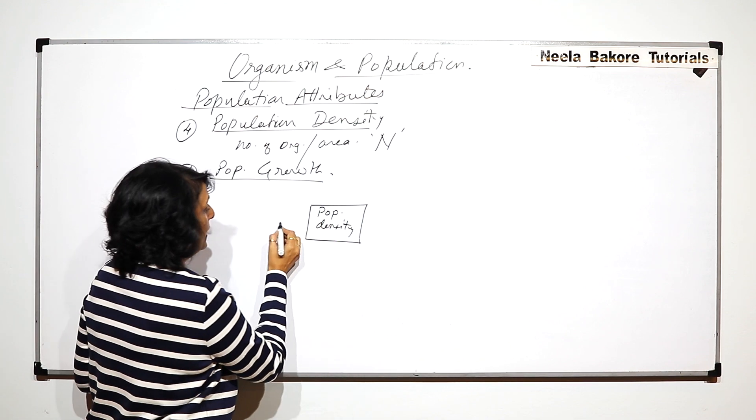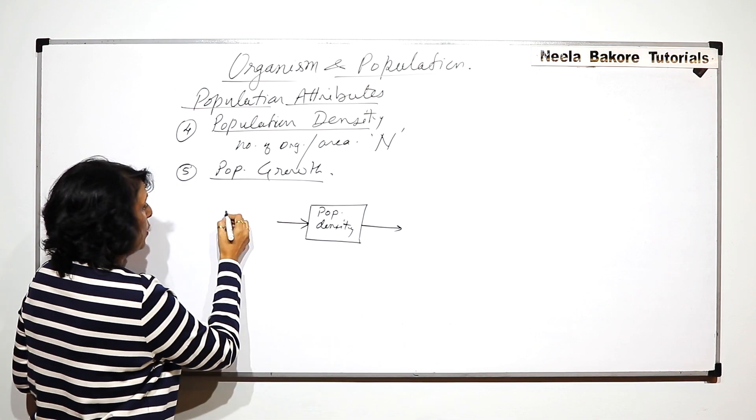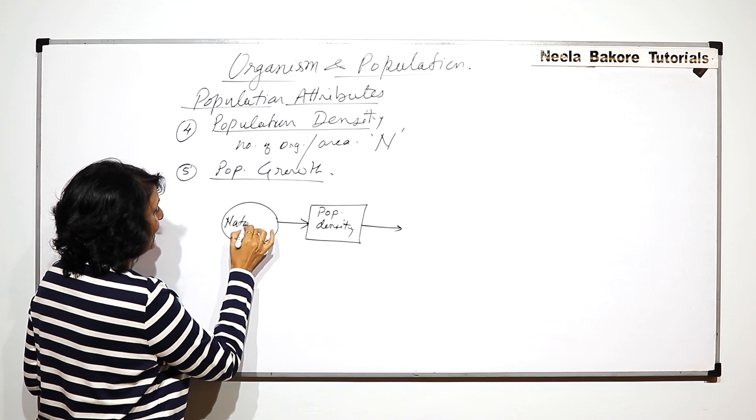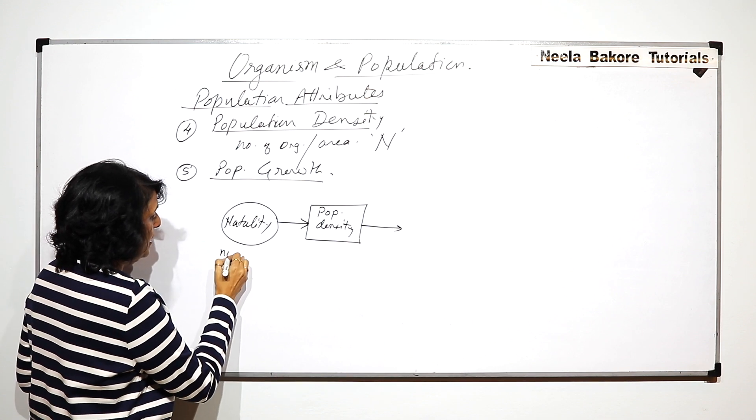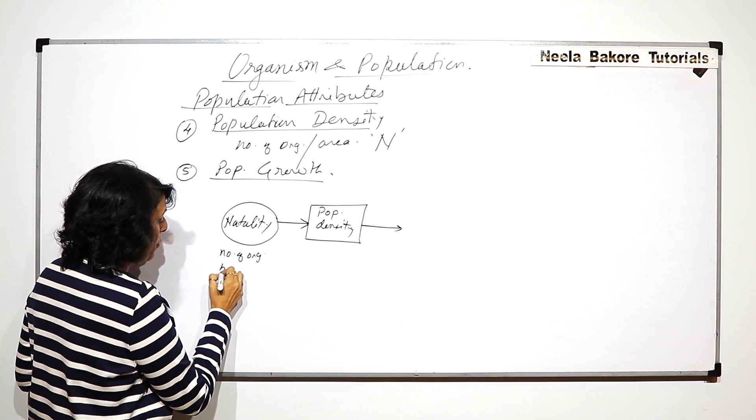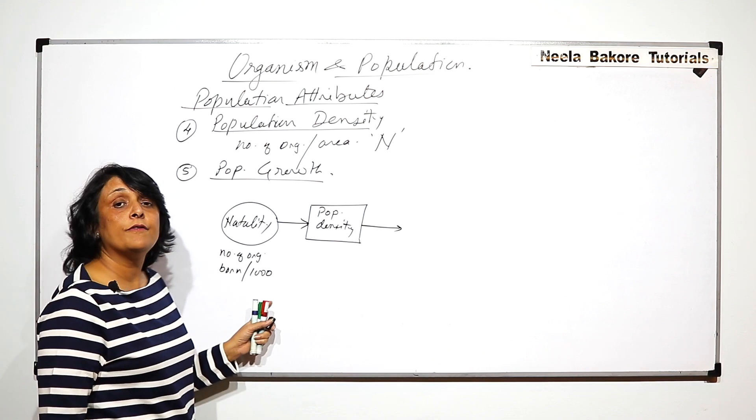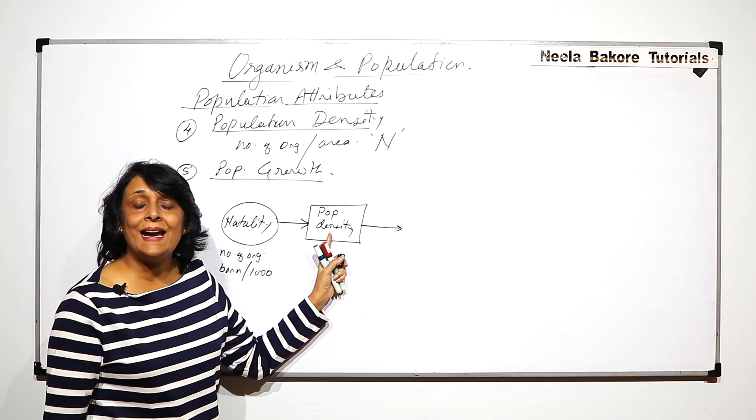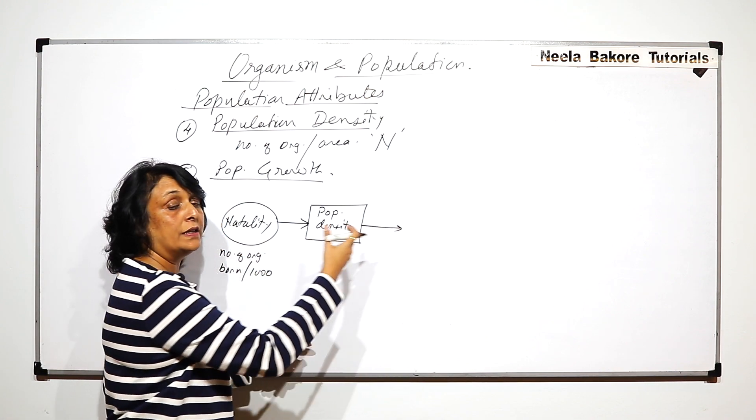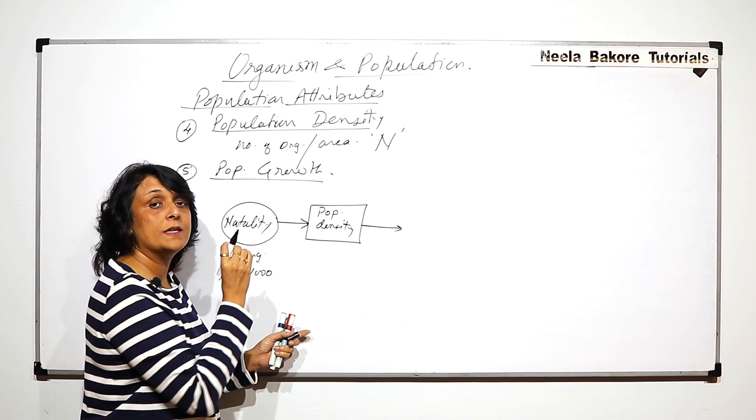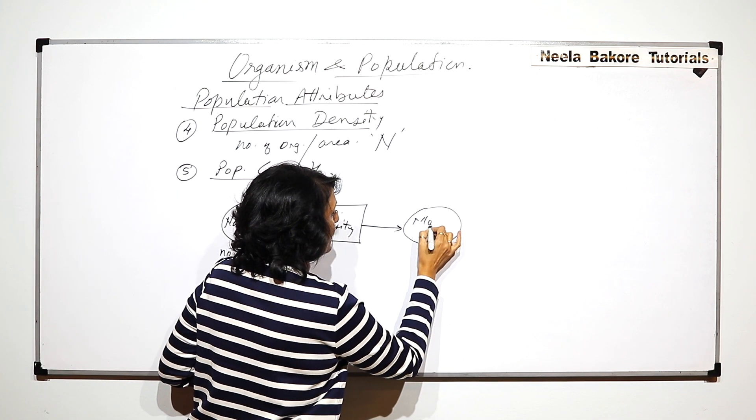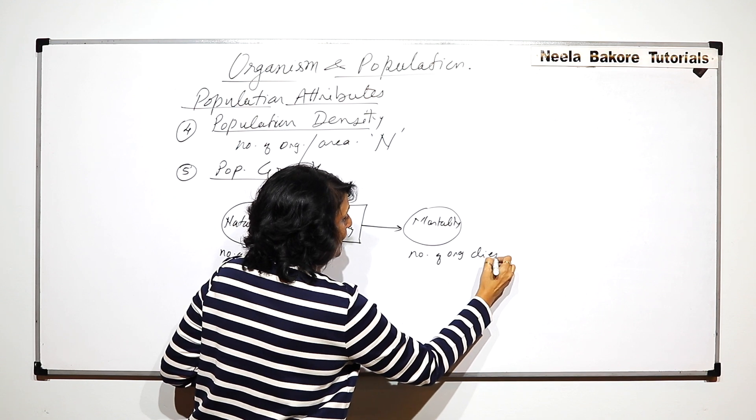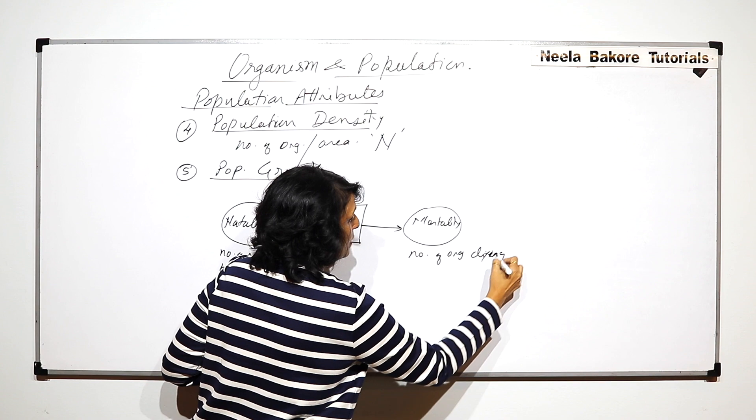The first one is birth, known as natality. Natality means number of organisms born per thousand. If this is more, that means there are more births, then the individuals would get added to the existing population. And if the number of organisms dying from the group is talked about, then we will use the word mortality.